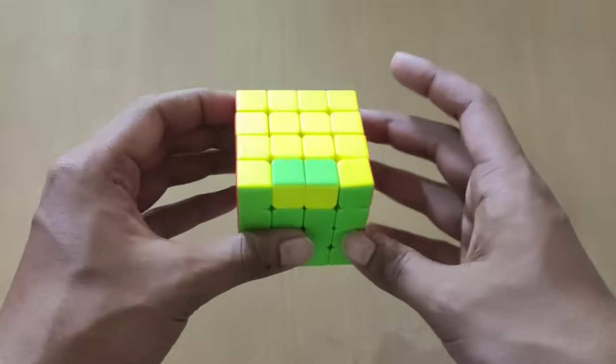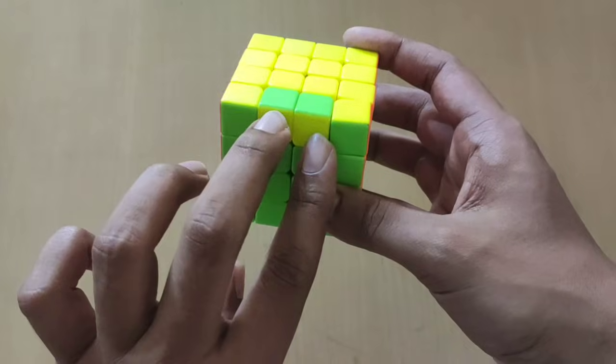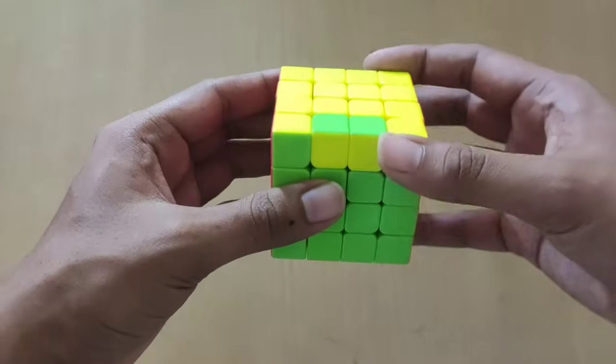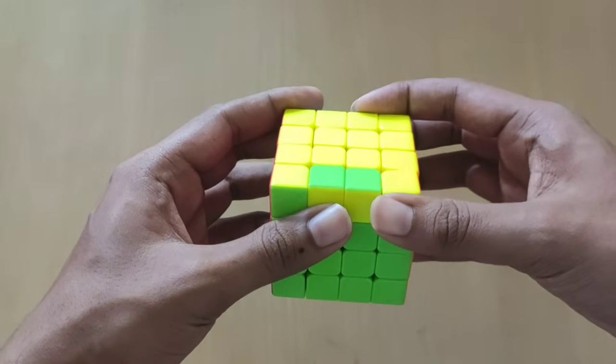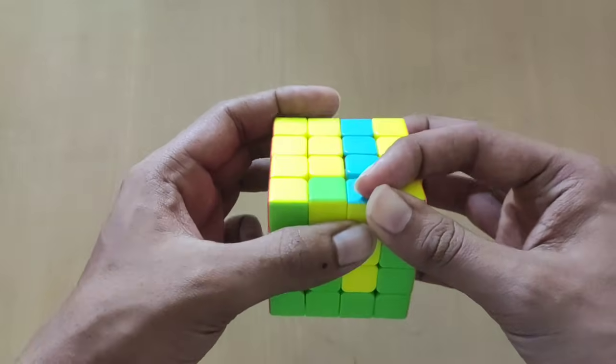Coming to one more parity, this is edge parity. The two edges which are in error have to be flipped. Check it out. The formula goes like this: small r prime.